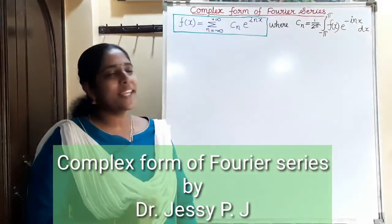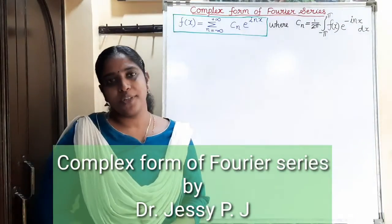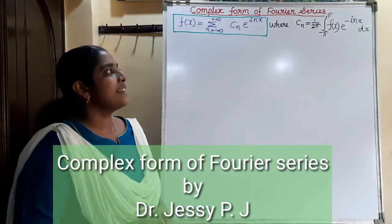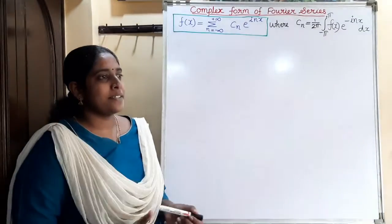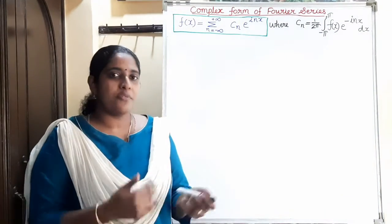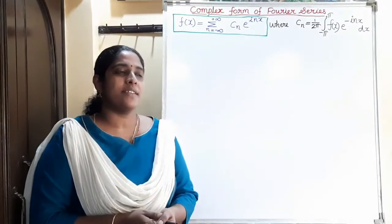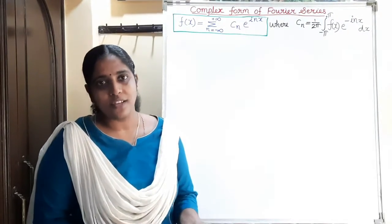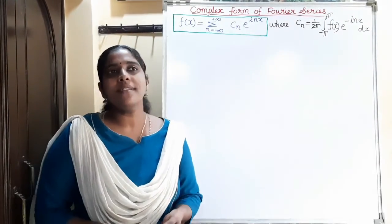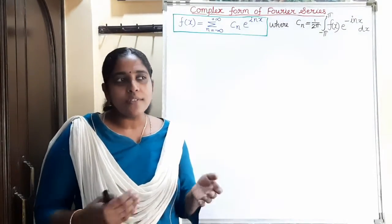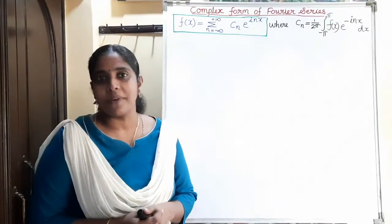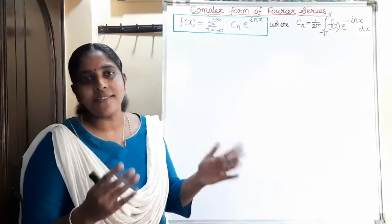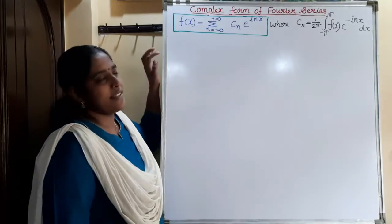Hi all, today we will discuss the complex form of Fourier series. The general formula we have studied earlier for the Fourier series consists of the Fourier coefficients a0, an, and bn. Sometimes it is easier to solve the Fourier series in terms of the complex form. So let's see what the complex form of Fourier series is.